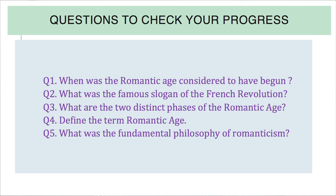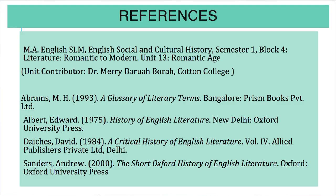Representative romantic works are in fact poems of feelings filled with meditation, which are often stimulated by natural phenomena and are concerned with general human experiences and problems. With this, we come to the end of this unit. Questions to check your progress: one — When was the Romantic Age considered to have begun? Two — What was the famous slogan of the French Revolution? Three — What are the two distinct phases of the Romantic Age? Four — Define the term Romantic Age. Five — What was the fundamental philosophy of romanticism? I hope you will refer to the MA English SLM of our university for details about this unit.